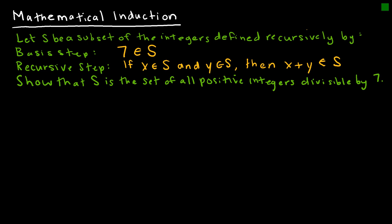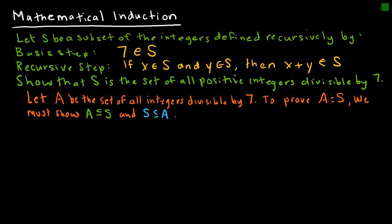What I'm trying to do is show that two sets are equal to one another. To show that two sets are equal, I have to show that they are subsets of one another. So I have to show that A — the set of all integers divisible by 7, defined as A = {7n} — is a subset of S, and that S is a subset of A. That will prove the two sets are equal.